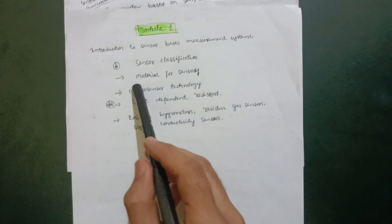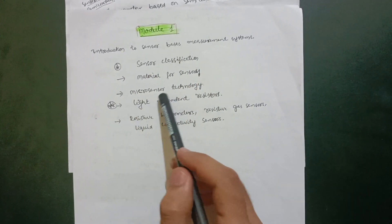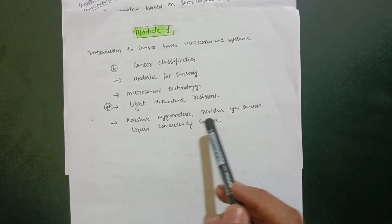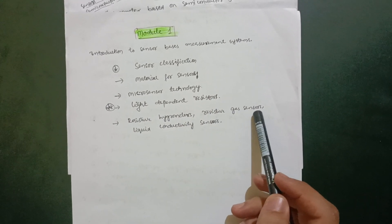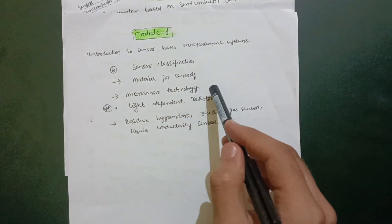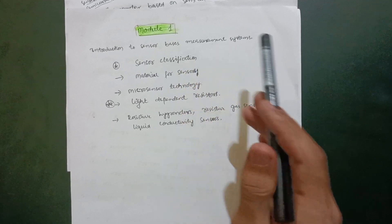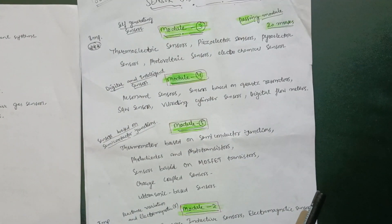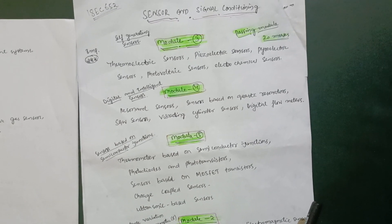Materials for sensors and microsensor technology, also light-dependent resistors, resistive hydrometers, and resistive gas sensors, liquid conductive sensors. This much content is enough for this particular module. If you just go through this content, you will easily score 80 to 90 marks, I am telling you friends.